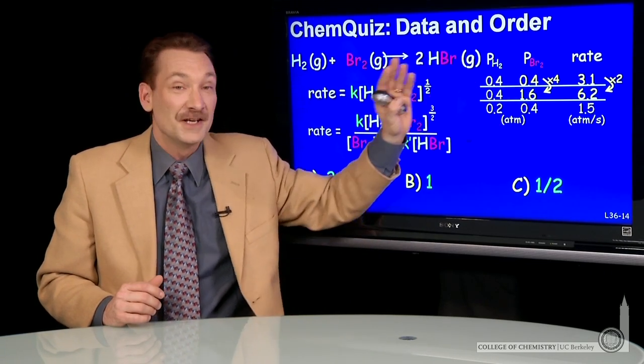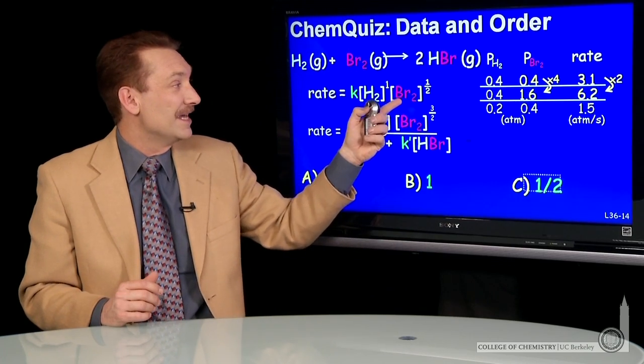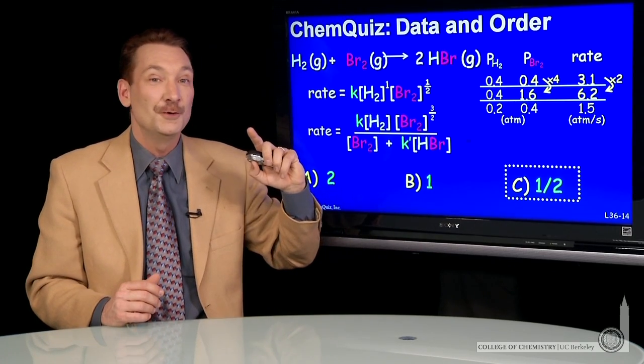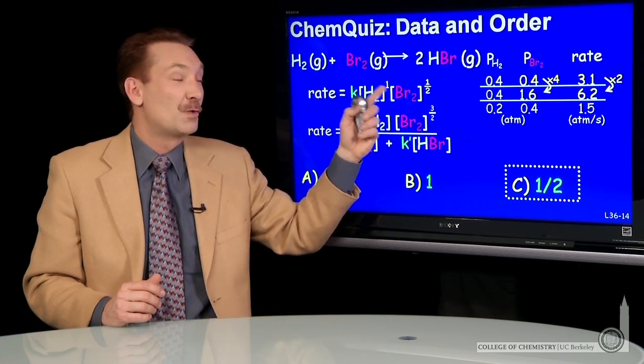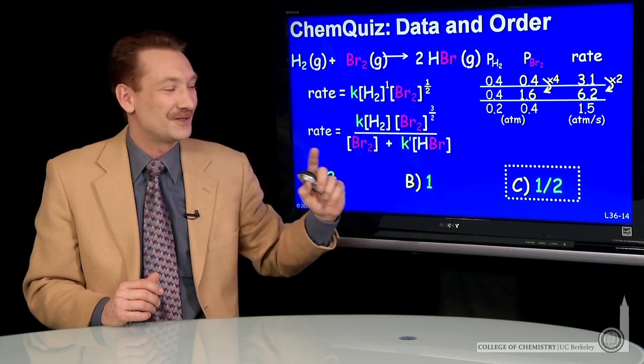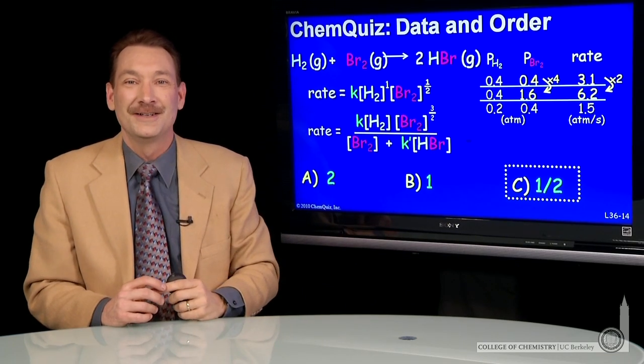But in our simple experiment with initial rates, we determined the initial rate with respect to Br₂ is dependent on the square root of the Br₂ concentration. So the correct answer here is 1/2.